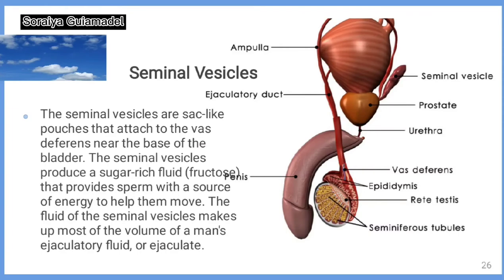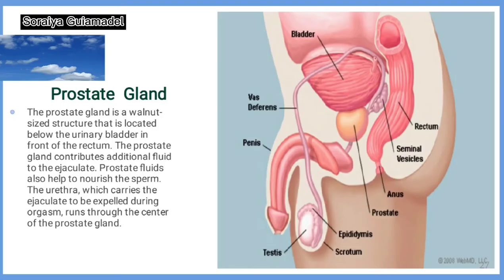Seminal vesicles. The seminal vesicles are sac-like pouches that attach to the vas deferens near the base of the bladder. The seminal vesicles produce a sugar-rich fluid, fructose, that provides sperm with a source of energy to help them move. The fluid of the seminal vesicles makes up most of the volume of a man's ejaculatory fluid or ejaculate.